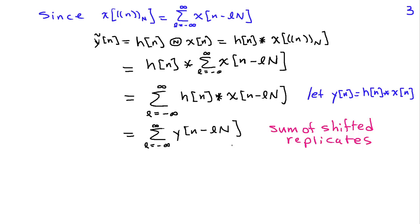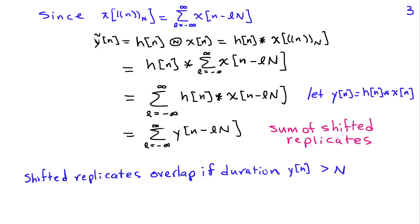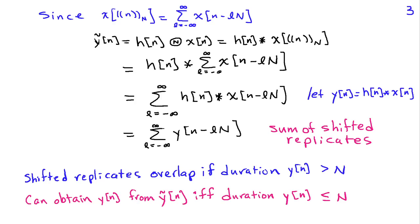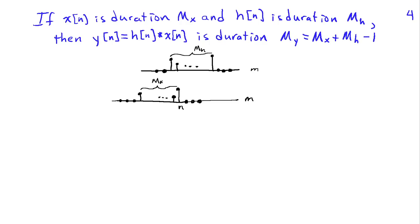The circular convolution is equivalent to a sum of shifted replicates of the ordinary convolution. The problem is that if the duration of y exceeds capital N, these shifted replicates will overlap and I can't identify y of n from y-tilde of n. On the other hand, if the duration of y of n is less than or equal to N, then I can obtain y of n from y-tilde of n — just pick out one period. In order to use circular convolution to compute ordinary convolution, we have to have some constraints on the length N we choose.